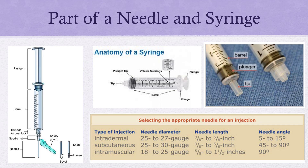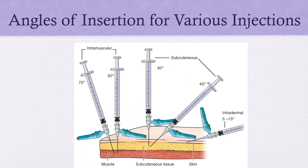Now let's look at each of the angles for giving injections. This slide shows a great picture of the angles of each needle — it's easy to see why we need a different angle to get into the appropriate tissue. For intradermal, just below the upper layers of the skin, we go at 5 to 15 degrees. For subcutaneous, it depends on patient size: small patients may be 45 degrees, while larger patients may go in at 90 degrees. For intramuscular, you're going in at a 90-degree angle to get into that muscle so the medication absorbs correctly.